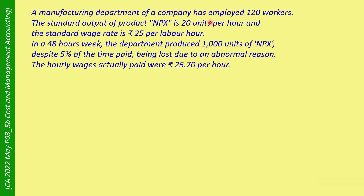A manufacturing department of a company has employed 120 workers. The standard output of product NPX is 20 units per hour and the standard wage rate is Rs.25 per labour hour. In a 48-hour week, the department produced 1,000 units of NPX despite 5% of the time paid being lost due to an abnormal reason. The hourly wage actually paid was Rs.25.7 per hour.